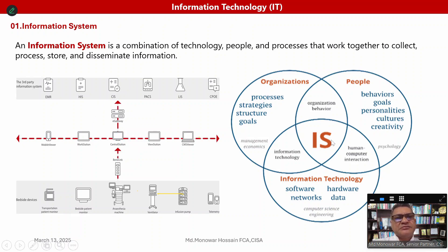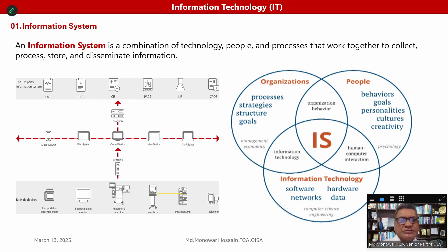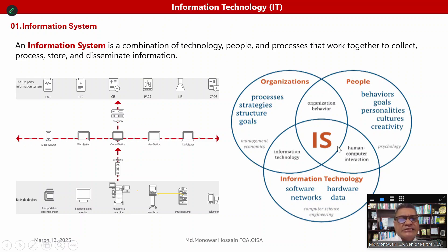An information system is a combination of people — such as users, system engineers, and programmers — organization, and technology processes. Without technology we cannot survive. So an information system combines technology, people, organization, and other elements.